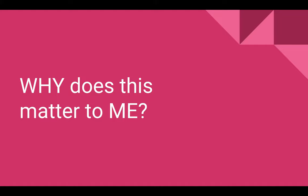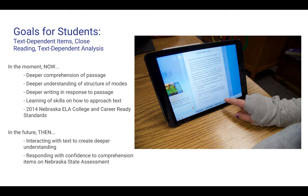You may be asking why does this matter to me. Well, the goals for our students when considering text-dependent items, close reading, and text-dependent analysis include wanting our students to have a deeper comprehension of the passage they're actually reading, and a deeper understanding of the structure of the modes they read — whether informational, personal narrative, or any other mode available.